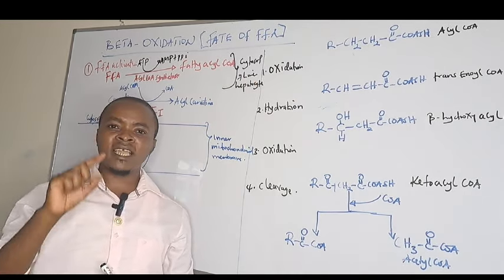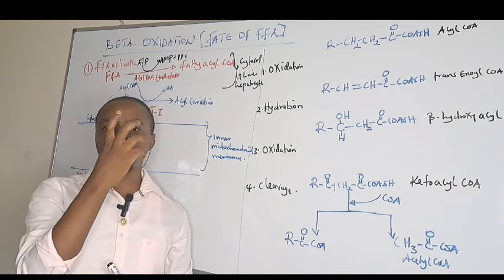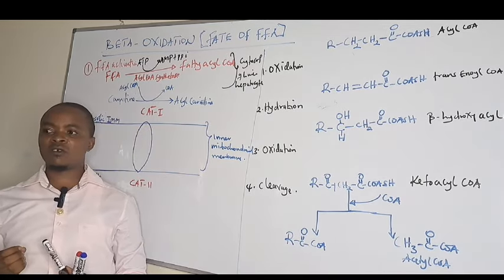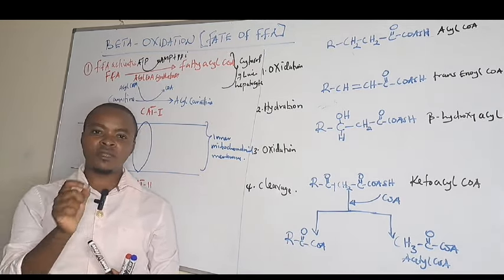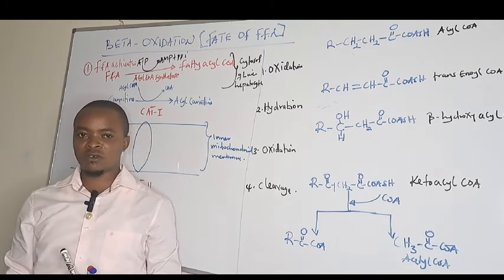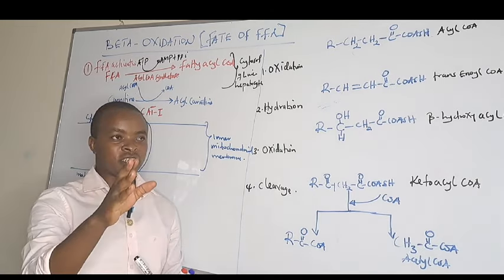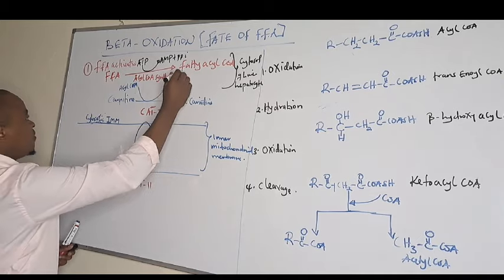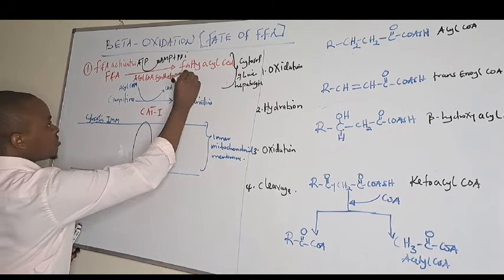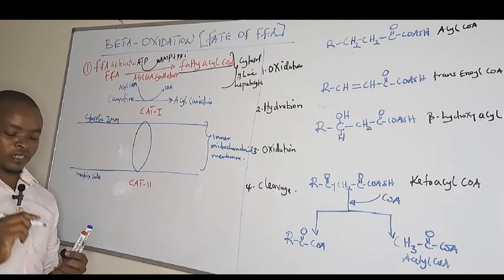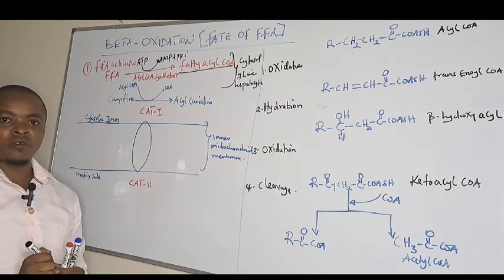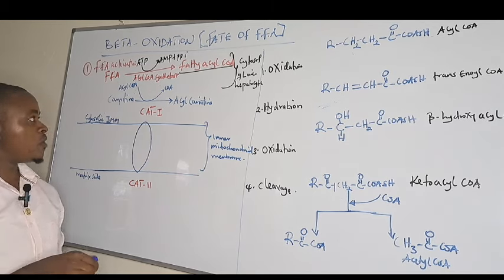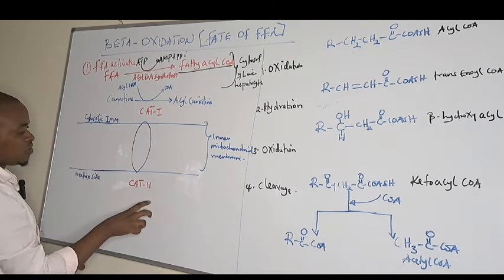The second step: we need to transfer this activated fatty acyl-CoA from the cytosol into the mitochondria. After forming fatty acyl-CoA — the activated form of free fatty acids — we need to transfer it into the mitochondria.